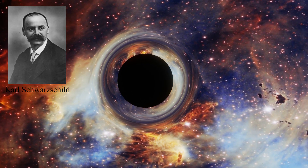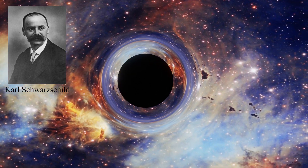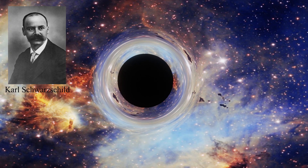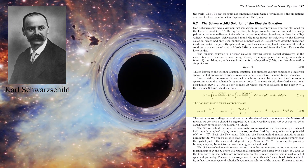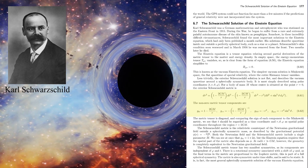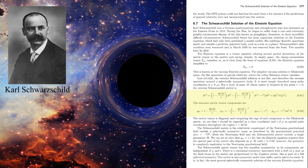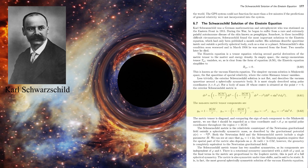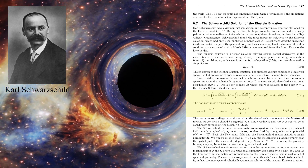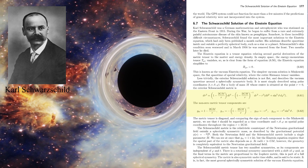Solutions of Einstein's equation describe the shape of space-time surrounding a massive body. The equations were solved in the very important case of a spherically symmetric mass by the German theorist Karl Schwarzschild shortly after Einstein's theory was published. What makes his achievement all the more remarkable is that Schwarzschild was under fire in the trenches on the eastern front and was suffering from a serious skin disease called pemphigus. Tragically, Schwarzschild died just a few months after his groundbreaking work was published.